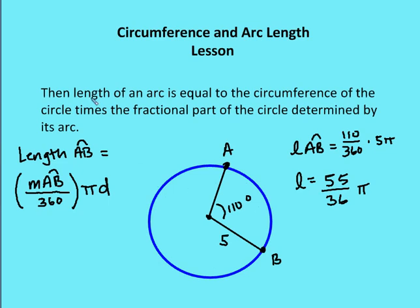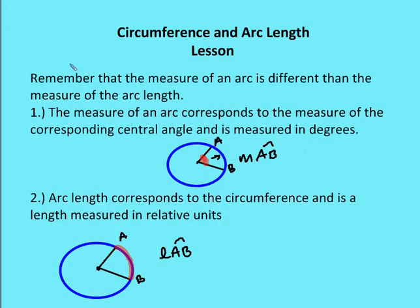The second thing we want to talk about is the length of an arc, which is going to be different from the measure of an arc. When we talk about the measure of an arc, we talk about a value in degrees that corresponds to the central angle. If we were to take the measure of the entire arc of a full circle, it'd be 360 degrees — that's a constant value. So the measure of an arc is typically some fraction of 360 degrees, and it corresponds to the central angle. When we talk about arc length, arc length corresponds to the circumference itself — the distance around the circle — and it's measured in relative units like feet, meters, or centimeters.